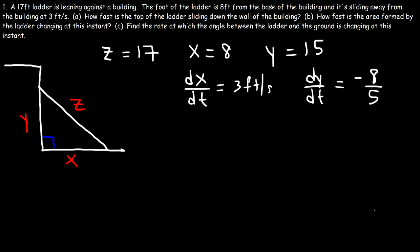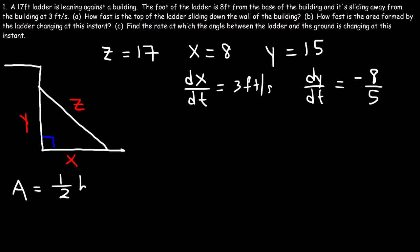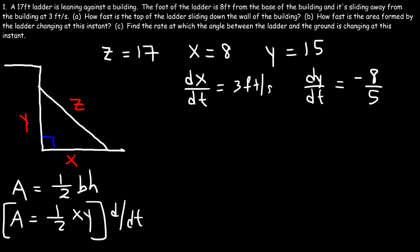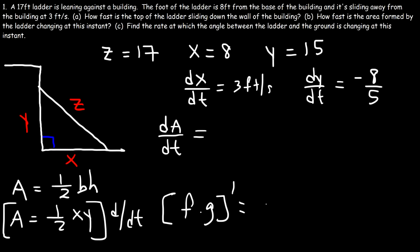Now let's move on to part B: how fast is the area formed by the ladder changing at this instant? The area of a right triangle is one-half base times height. In this problem the base is X and the height is Y, so A equals one-half times X times Y. We have dx/dt and dy/dt, so we can differentiate this equation with respect to time. The derivative of A is dA/dt, and we need to use the product rule.